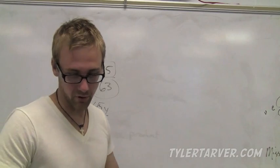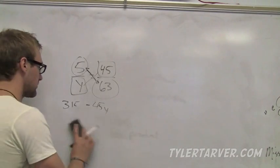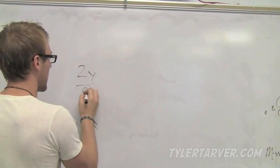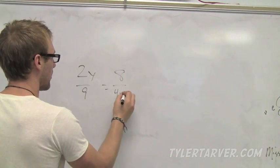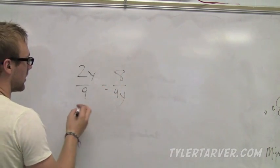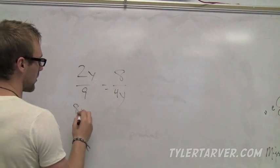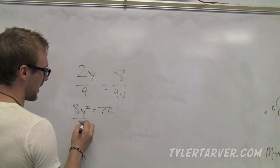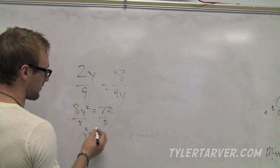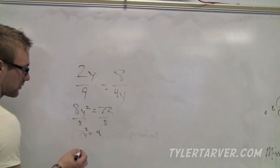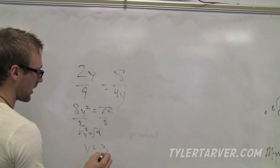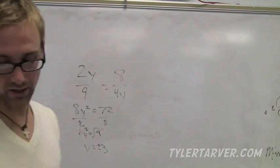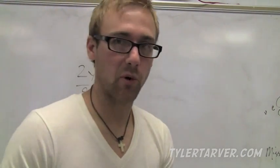Let's do another problem, one that's a little more difficult. 2y over 9 equals 8 over 4y. It's more difficult because we've got two of those, so we just multiply. 2 times 4 is 8, y squared equals 72. Now we've got to get rid of that 8, we divide. y squared equals 9. We do the square root. We know y can equal 3 or negative 3, so we would put plus or minus 3.